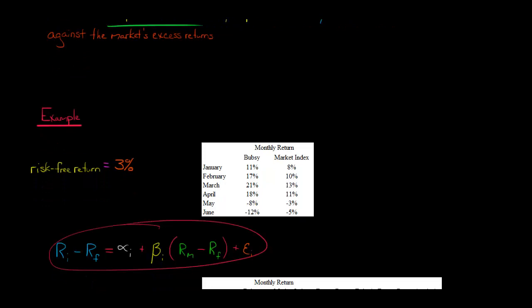This is the model we're going to be performing for our regression analysis. We've got the return of Bubsy, that's stock I in this case—could be Walmart, could be Costco, but in this case it's Bubsy. So the return of Bubsy minus the return of the risk-free rate.